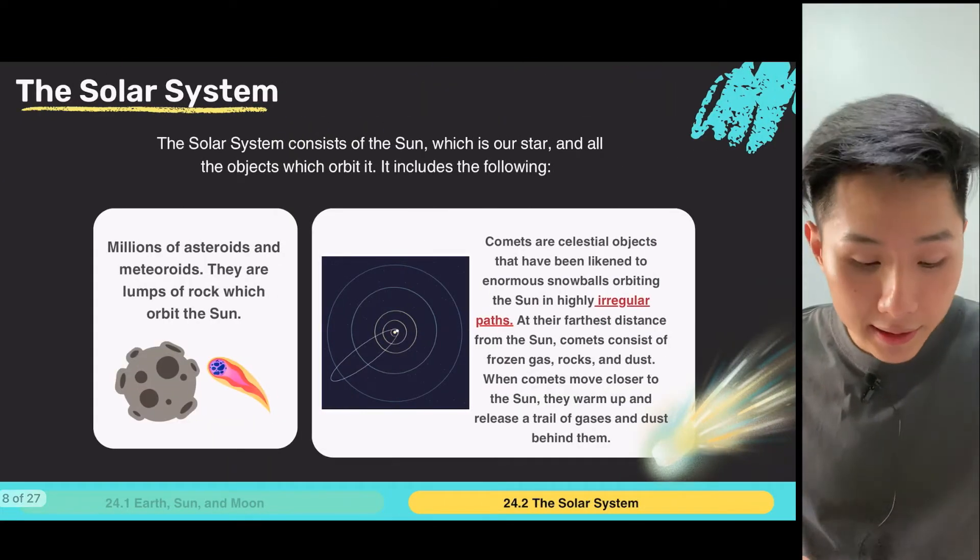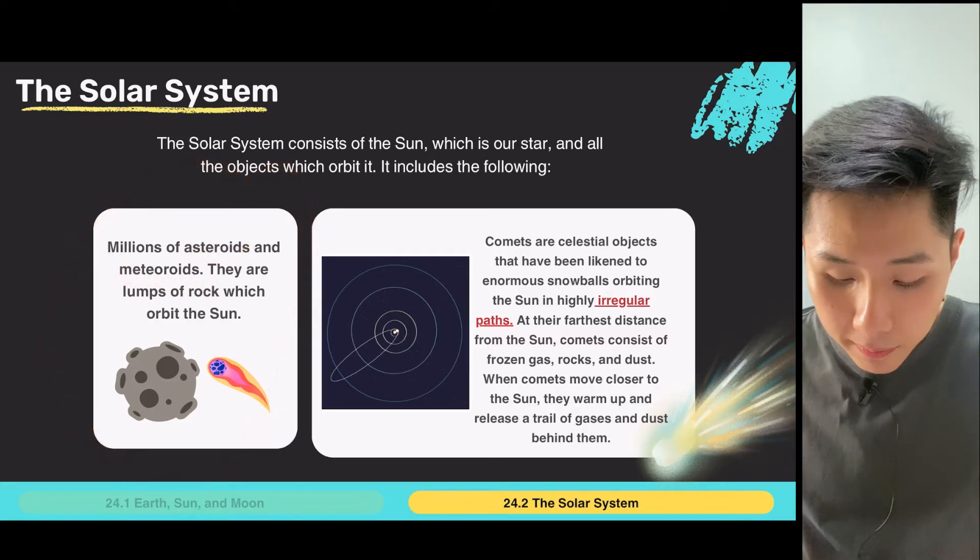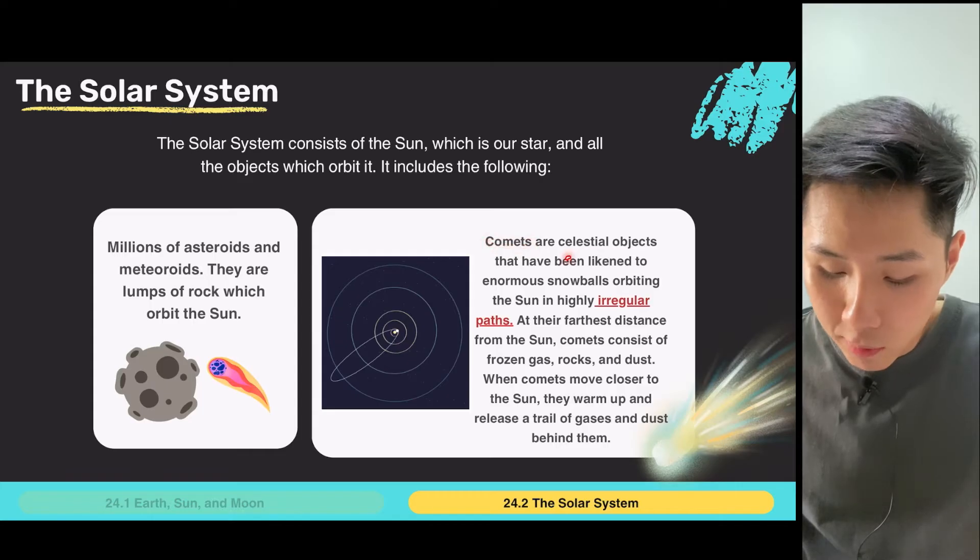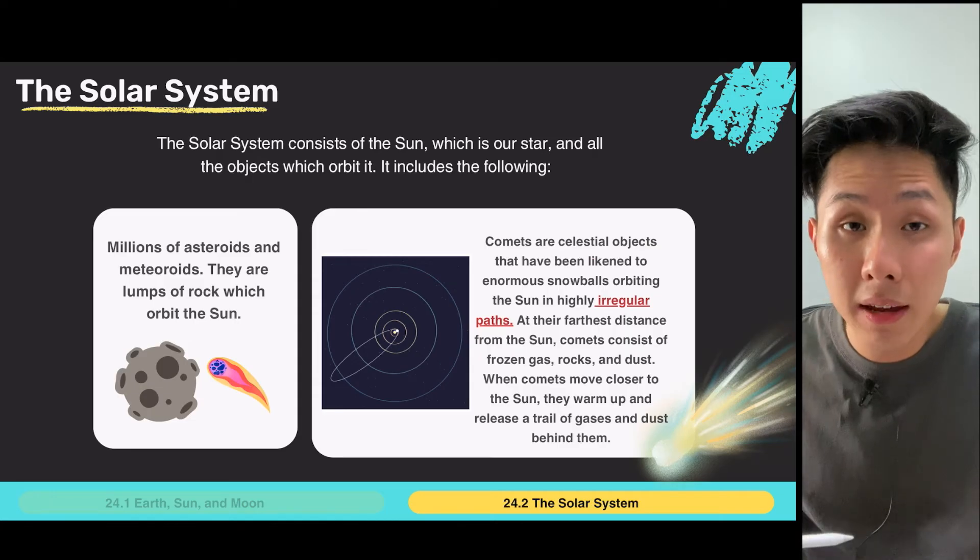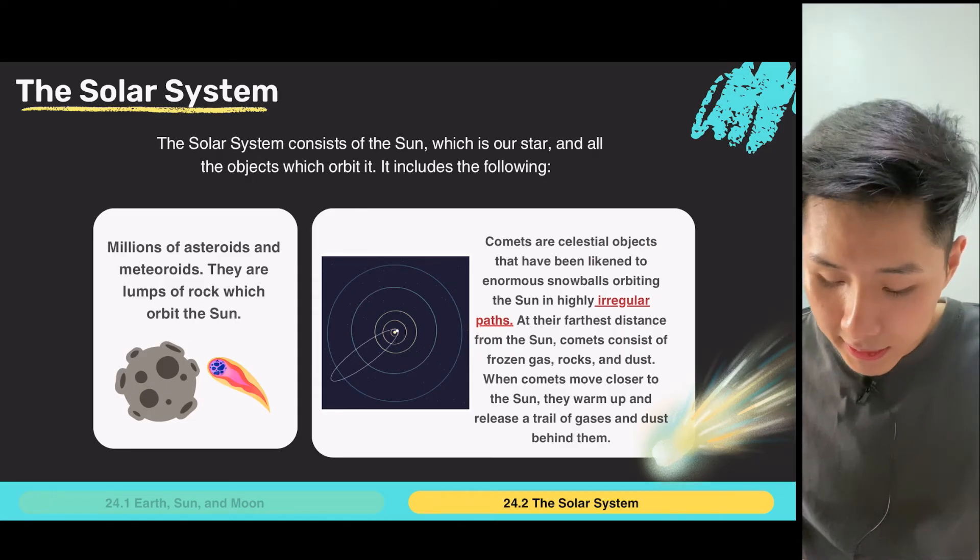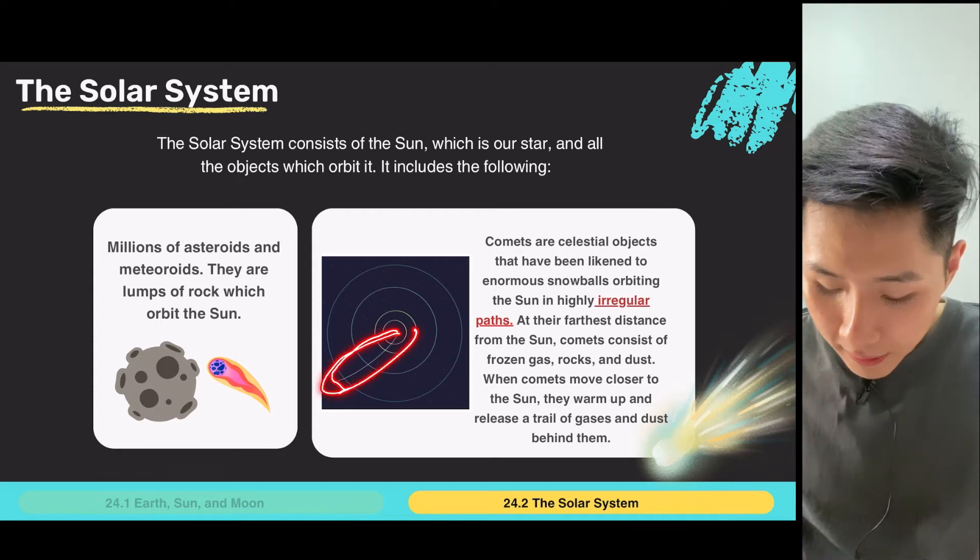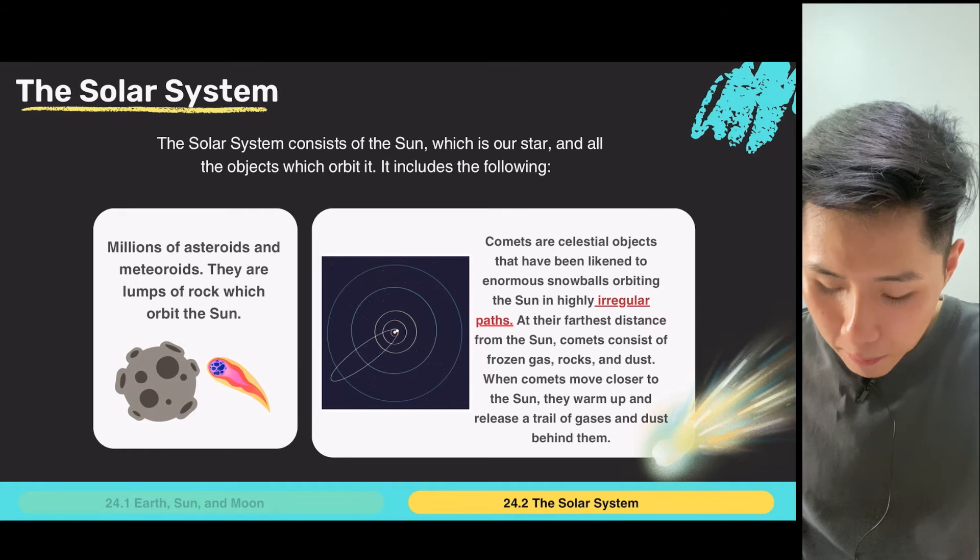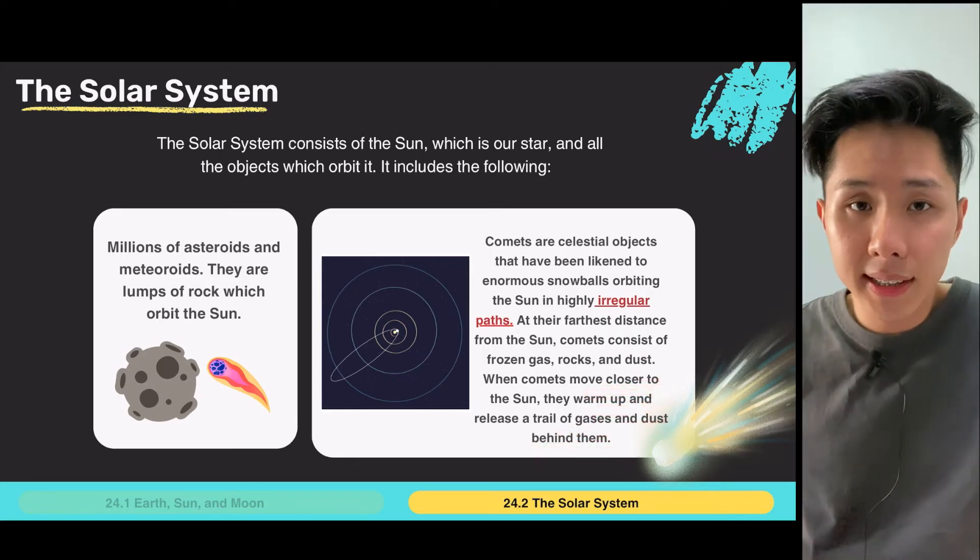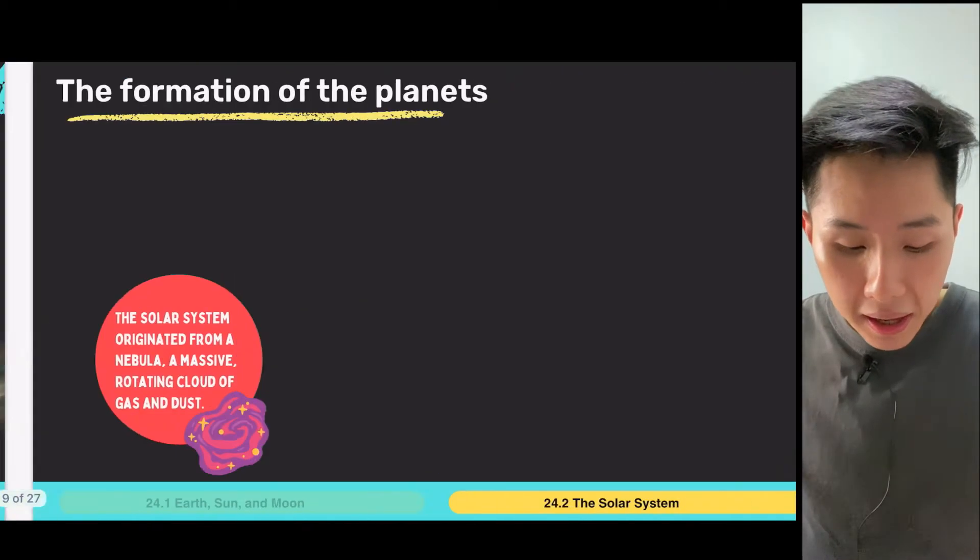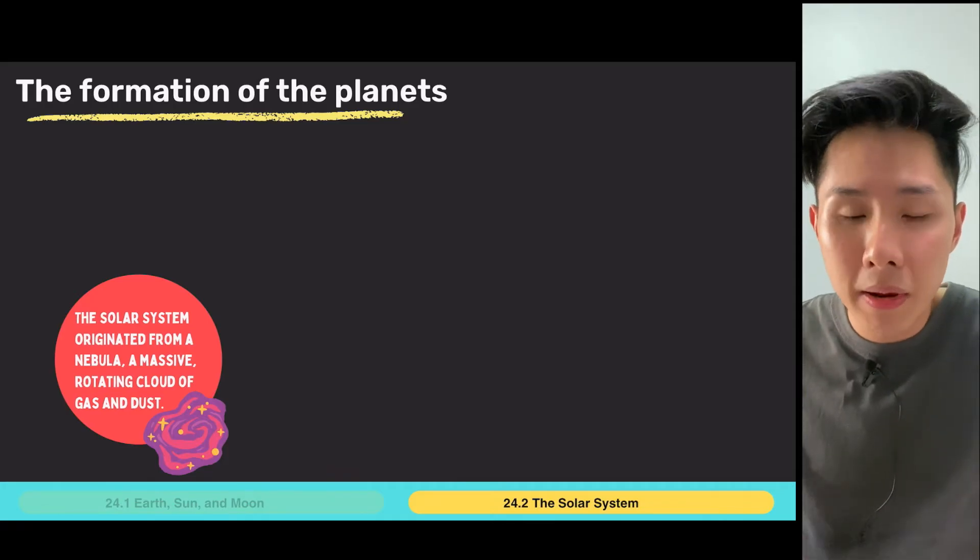And besides that, we also have something called asteroids and meteorites in the solar system. And comets, which is a celestial object that looks like a snowball. And they travel in a very irregular fashion. So the further it is from the sun, they'll move like that. So when they move close to the sun, they warm up and release a trail of gas and dust behind them. So that's just some facts and some objects that are in the solar system. And let's look into some of these planets and see how they are formed from the beginning.